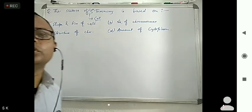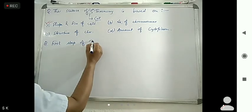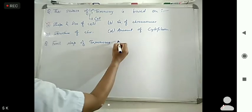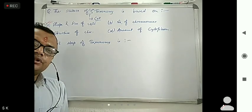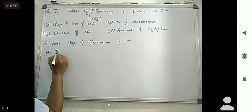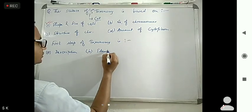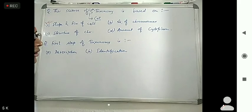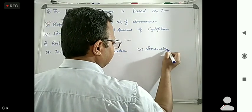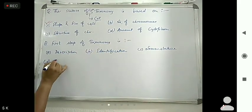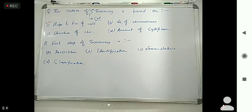Next question: what is the first step of taxonomy? The options given are: description, identification, nomenclature, and classification. The first step of taxonomy is identification.